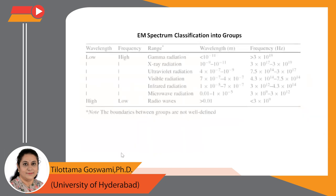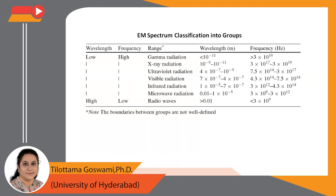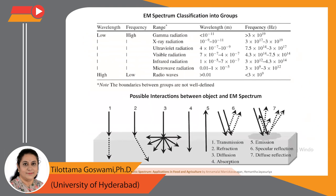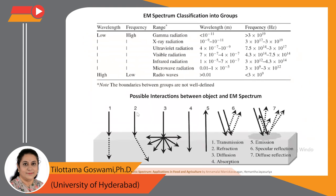We can see here the different groups and the ranges of wavelength and frequency. The possible interactions between an object and the electromagnetic spectrum can be utilized for studying the object's properties. The interaction groups can be seen pictorially as: transmission, refraction or diffusion, absorption, emission, specular reflection, and diffuse reflection.